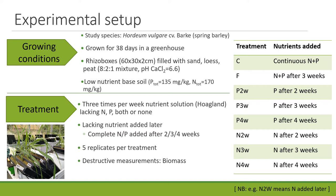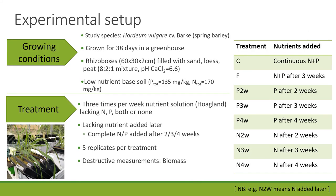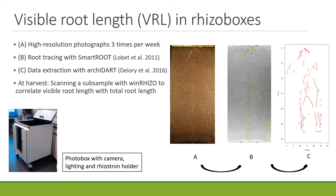To clarify the abbreviations used throughout: the control group received Hoagland with nitrogen and phosphorus all the time. A false control received both nutrients after three weeks to see which nutrient was more limiting. Then we added either phosphorus or nitrogen after two, three, or four weeks — so 'N2W' means nitrogen was initially lacking and was added after two weeks. We measured visible root length by taking photographs three times per week using a photo box, then traced roots using SmartRoot software to extract the data.